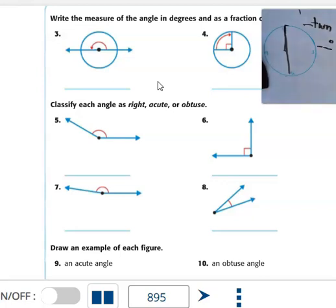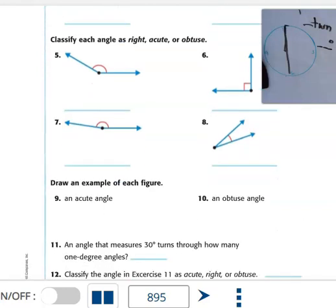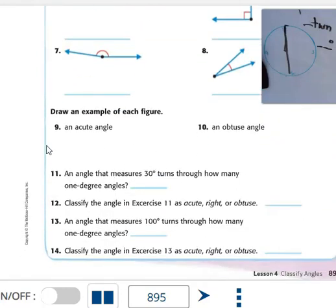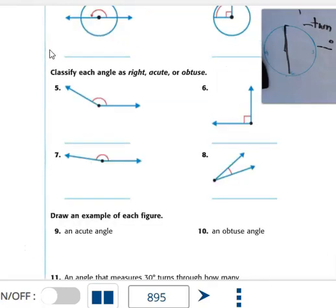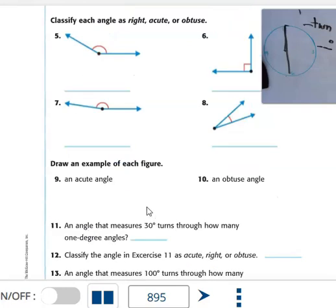Number five through eight, you're just going to label right, acute, or obtuse. Remember, if it's this right angle like it's showing in number six, that would be right. If it's greater than that, it's going to be obtuse, regardless of how it's spun. And if it's less than that, it's acute, regardless of how it's spun. For numbers nine and ten, draw an example of each figure. You can use these examples as you've labeled up here to help you draw those. You'll need one acute and one obtuse.